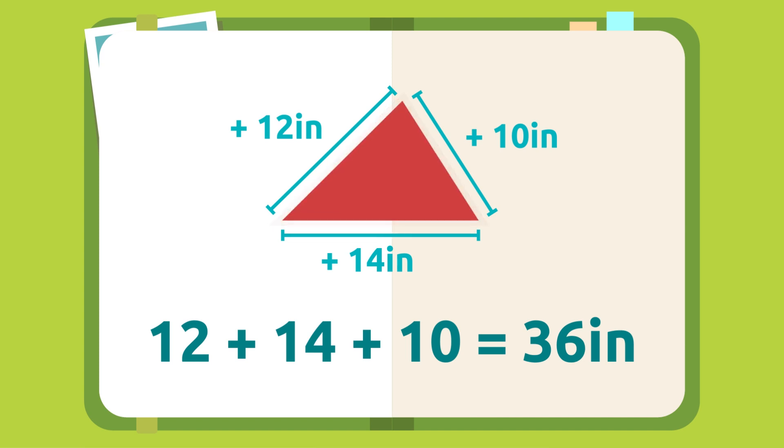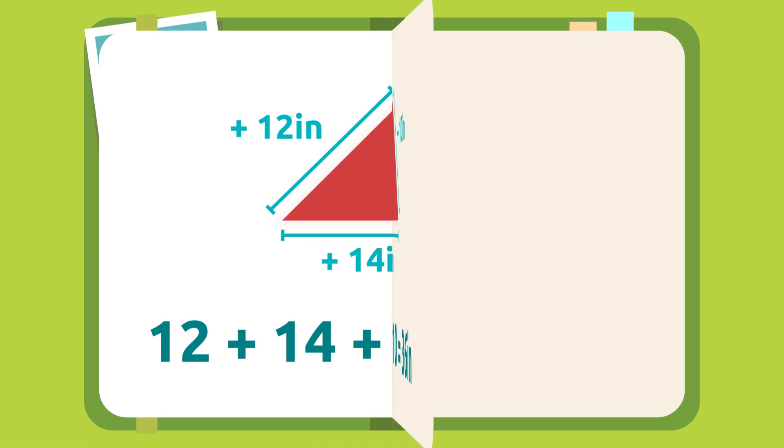This square has four equal sides. Each side measures 20 feet. To find its perimeter, we can use two strategies: add 20 plus 20 plus 20 plus 20 equals 80, or multiply four sides by 20 feet.